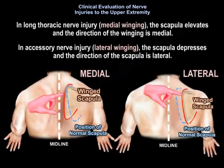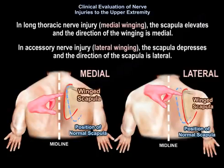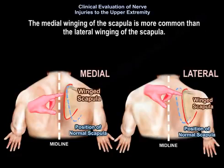In long thoracic nerve injury, medial winging occurs — the scapula elevates and the direction of winging is medial. In accessory nerve injury, lateral winging occurs — the scapula depresses and the direction is lateral. Medial winging is more common than lateral winging.